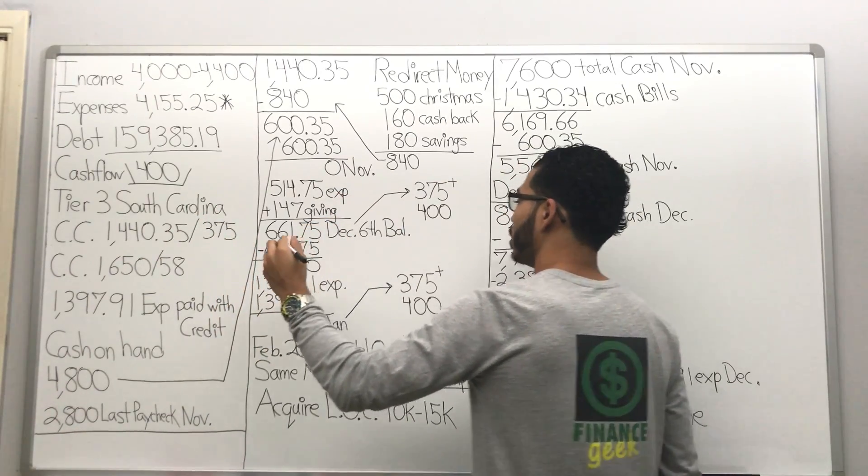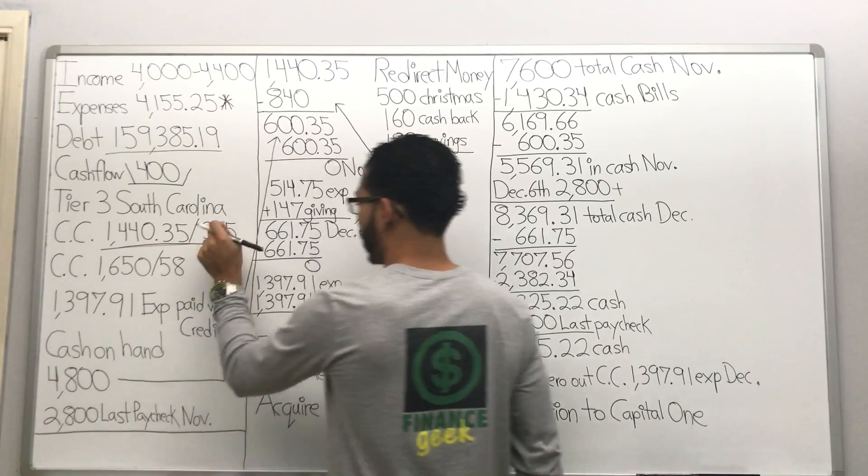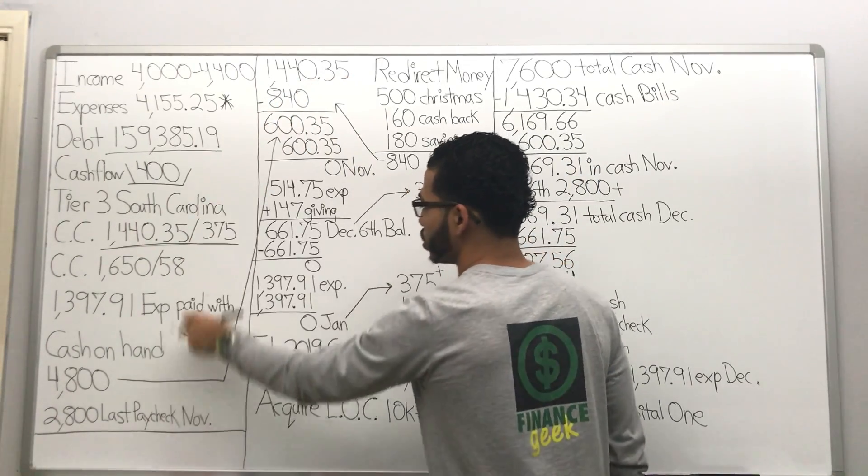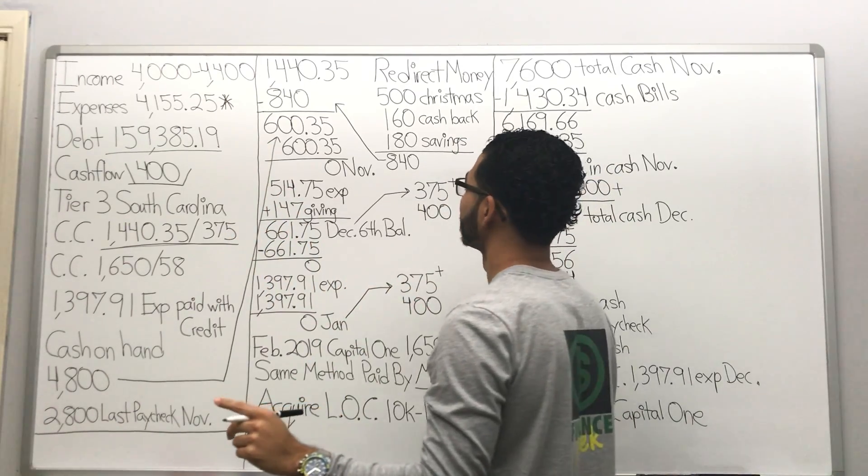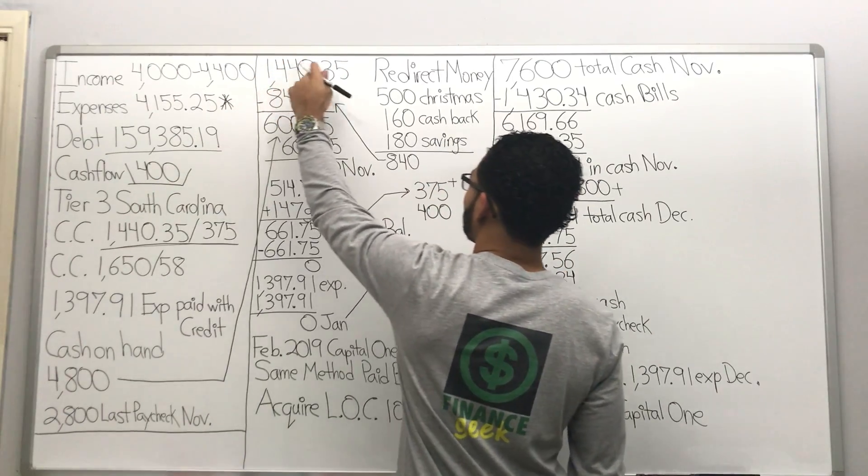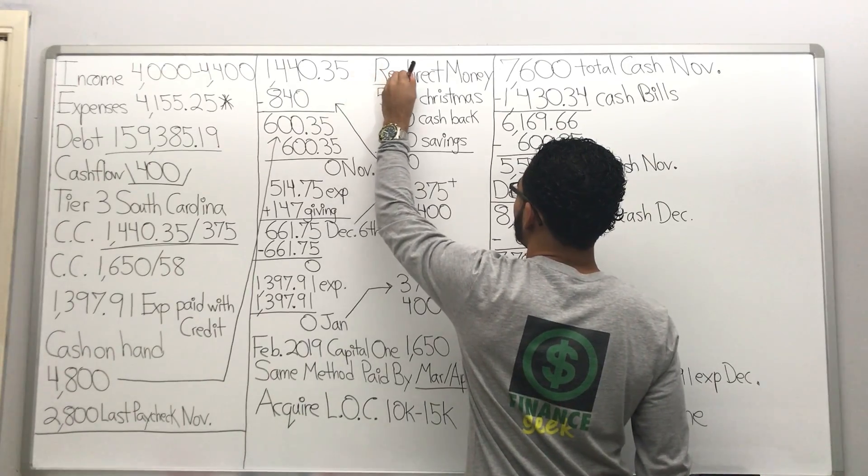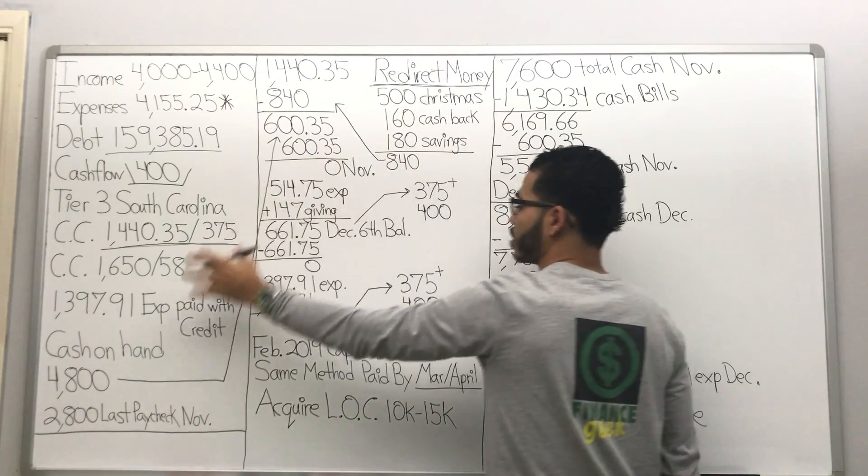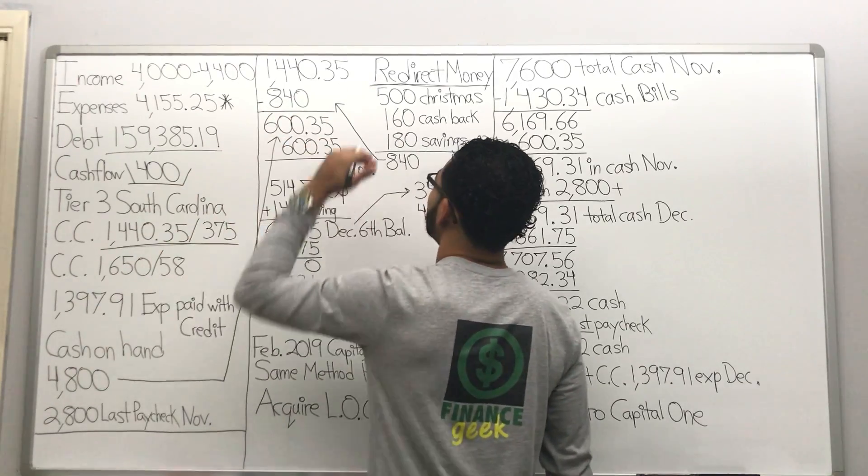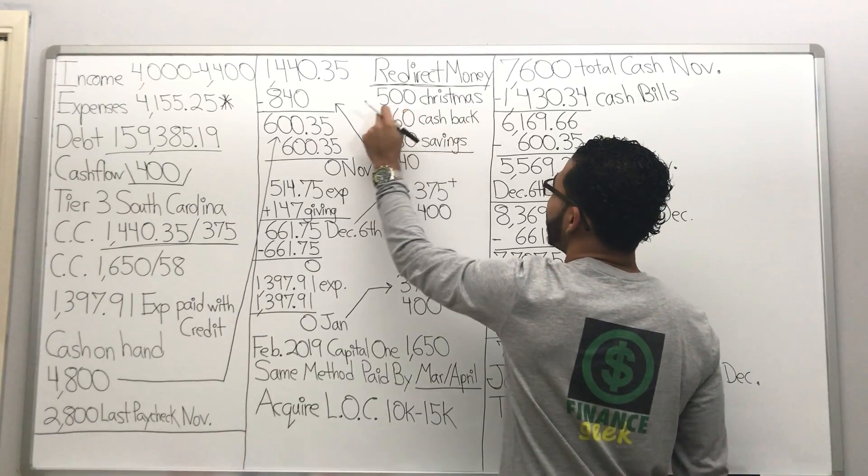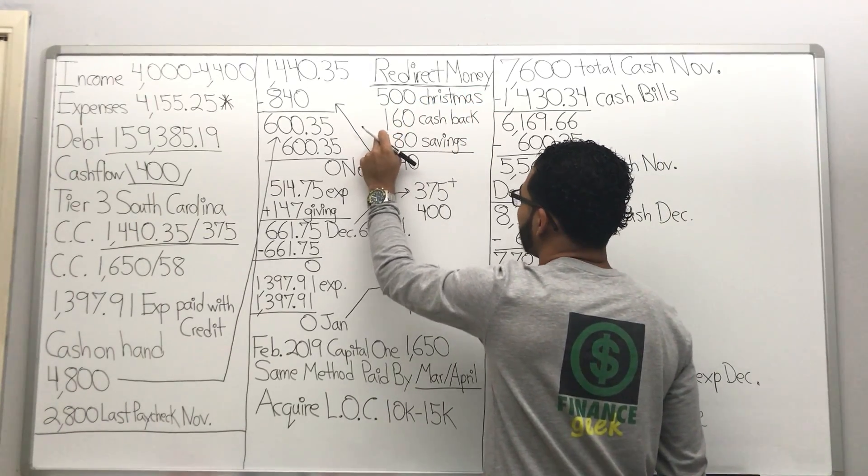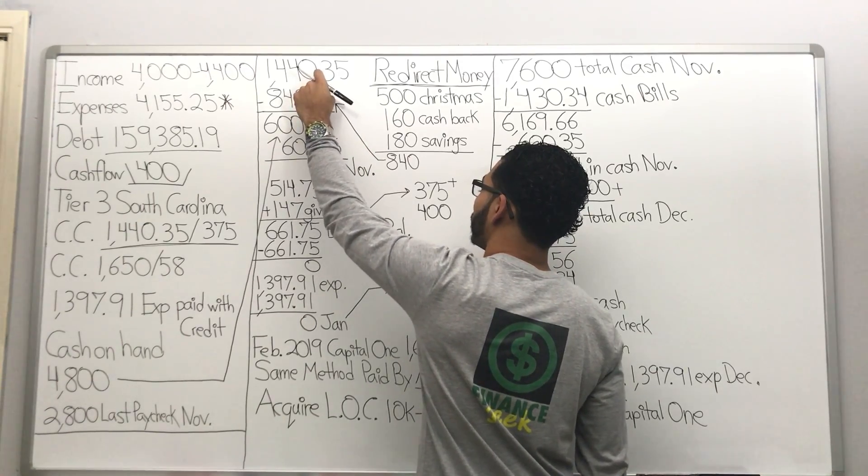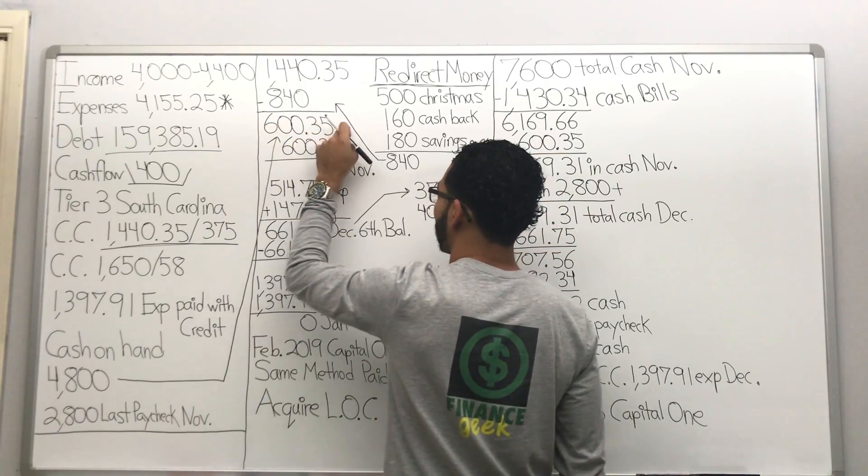Now what I wanna do is I wanna wipe this credit card out first because I wanna get to that cash flow of $375. I wanna get there as fast as possible. Of all the debts that she has, that's the one that I can pay off the fastest. So I took the debt number $1440.35, and you know how I always say to redirect money back to you? Well that's exactly what her and I did. We've got $500 saved for Christmas expenses, $160 cash back that we're gonna get, $180 in savings, that's a total of $840. I want her to redirect that to this.